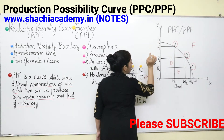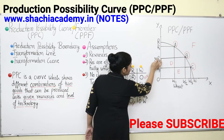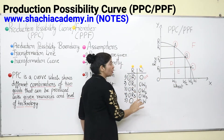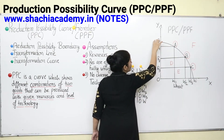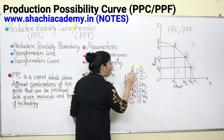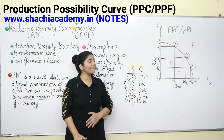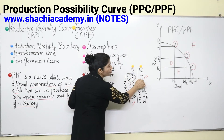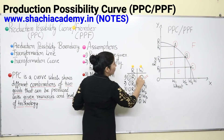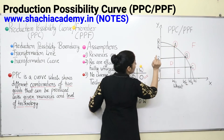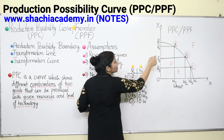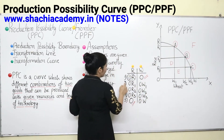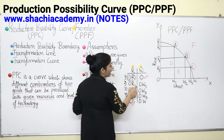At point R on the y-axis, we are producing only rice — that means zero wheat. All the resources in the economy are devoted towards production of rice only. So the first combination is: OR amount of rice and zero amount of wheat. Moving from point R to point A gives the second combination: OR1 quantity of rice and OW1 quantity of wheat. So combination two is OR1 amount of rice and OW1 amount of wheat.